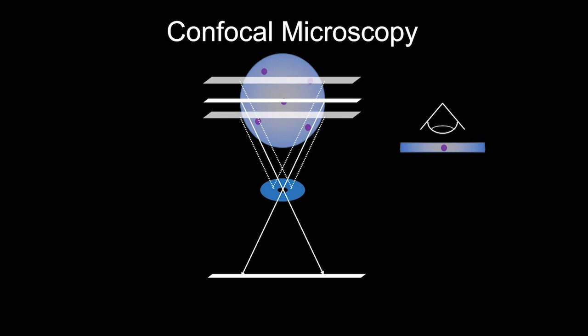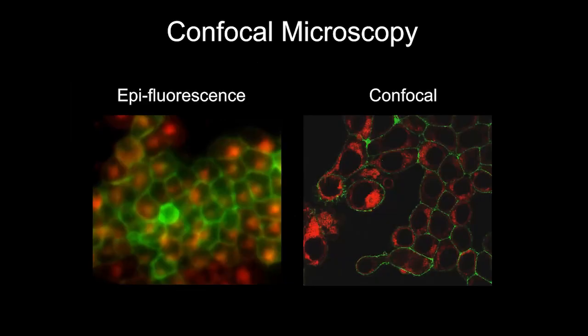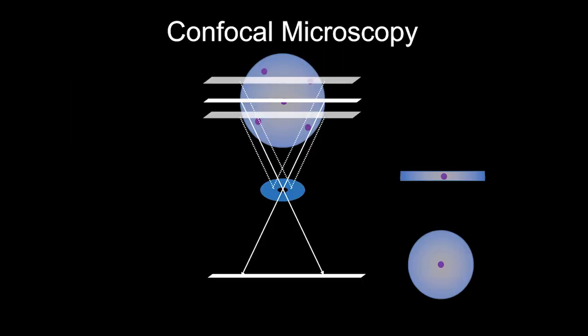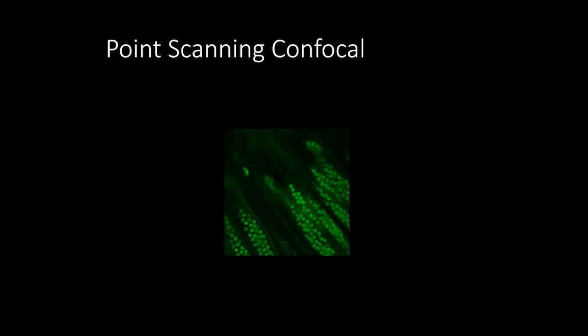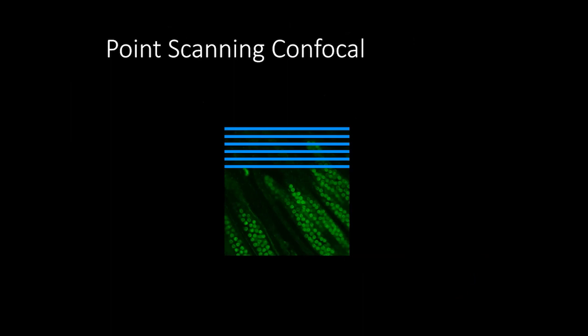Confocal microscopy gives you images like this — you can clearly see the green is on the plasma membrane and the red is peri-nuclear. Most of the confocal scanners in the facility are point-scanning confocals: since light comes through only one spot, a single detector images the sample line by line, point by point, like an inkjet printer.